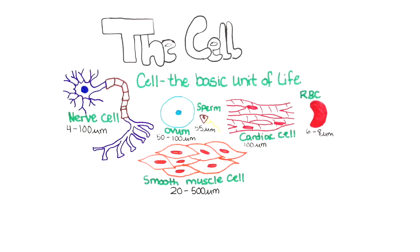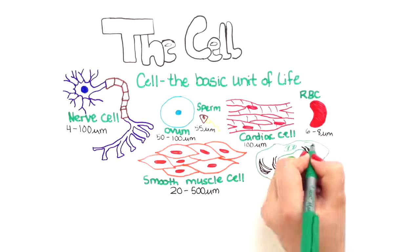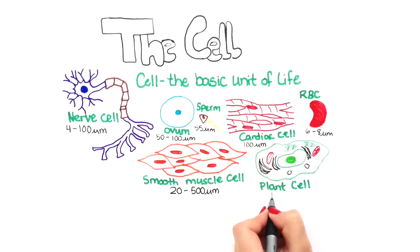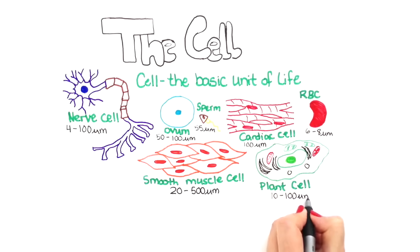Red blood cells are quite small, ranging from 6 to 8 micrometers. There are also other types of cells that exist, such as plant cells, which can range from 10 to 100 micrometers.